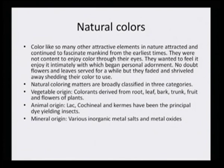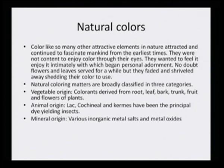Natural coloring matter is broadly classified into three categories. First, from vegetable origin — colorants derived from root, leaf, bark, trunk, stem, fruit, flowers and so on. Second, animal origin, where colorants could be derived from black, cochineal, and karmis, which have been principally the dye-yielding insects.